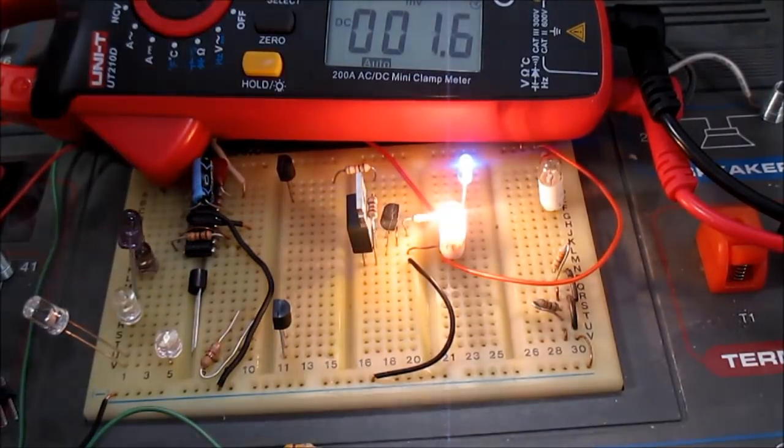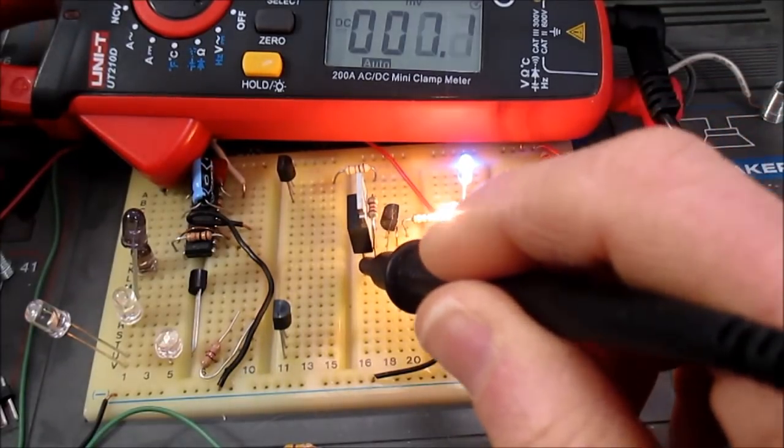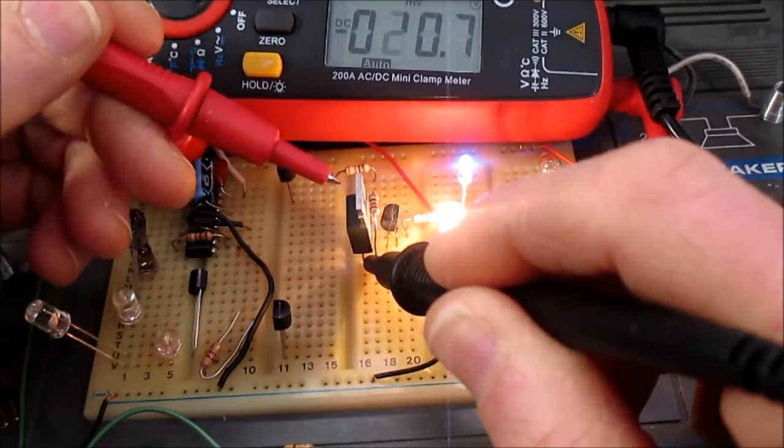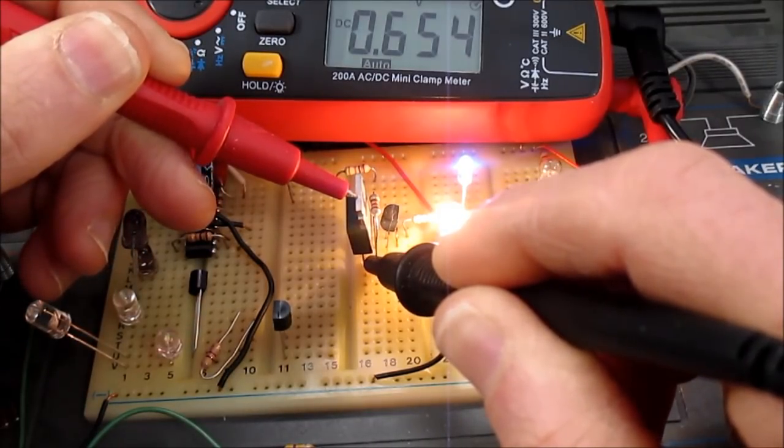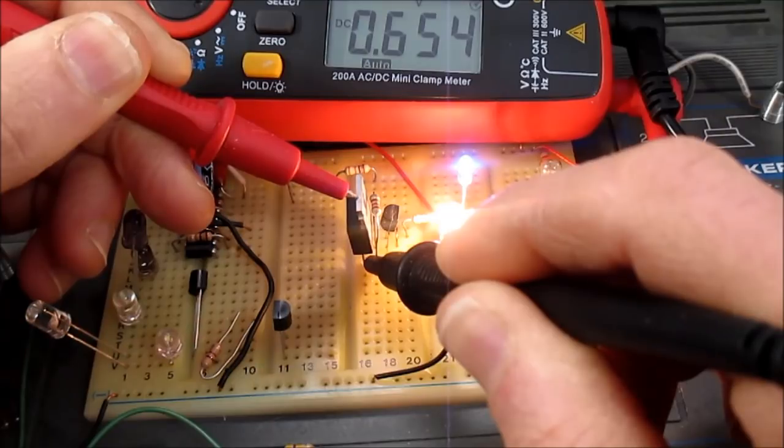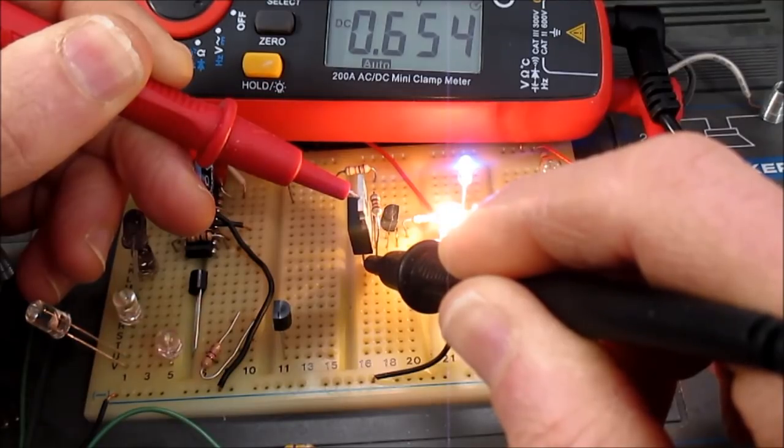So let's check the saturation here. So I'll put my probe on the emitter and the other probe on the collector of Q2. And look at that, the voltage is 0.654 or 654 millivolts. So it is not saturating.